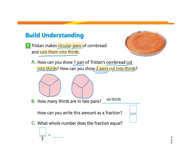Then it asks, how can you write this amount as a fraction? We would write six, because that's the number of parts we counted. And thirds would be three for the total amount of parts within the group — so in each group, there are three parts in each pan.